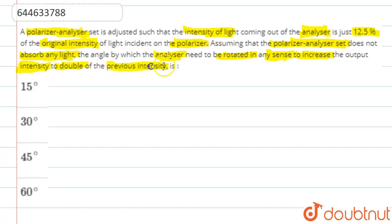Basically, we need to solve this question. For the polarizer-analyzer set, we have an equation: I = I₀cos²θ, where I₀ is basically the initial intensity of light. Here it is given that I is 12.5% of the initial one.